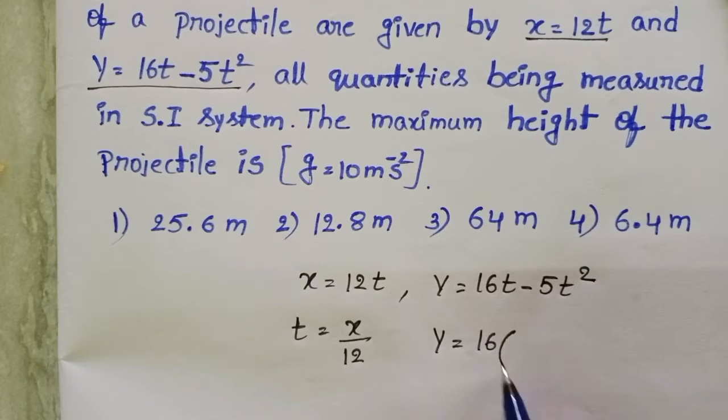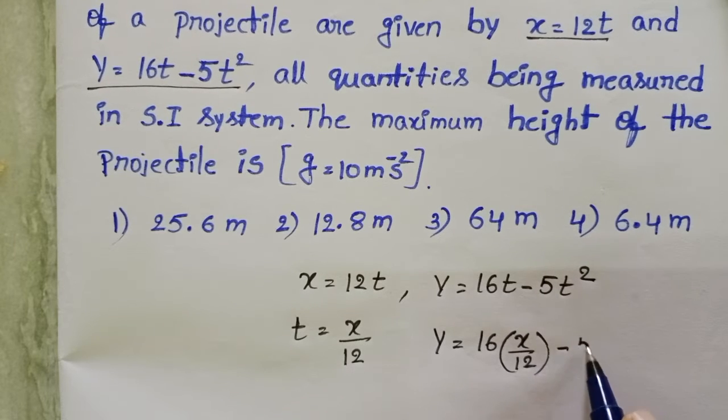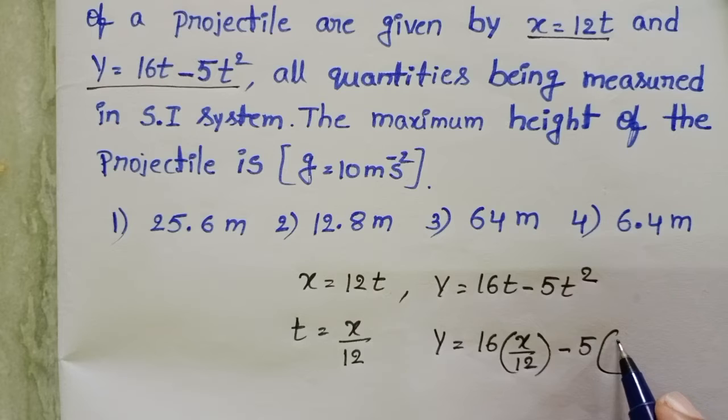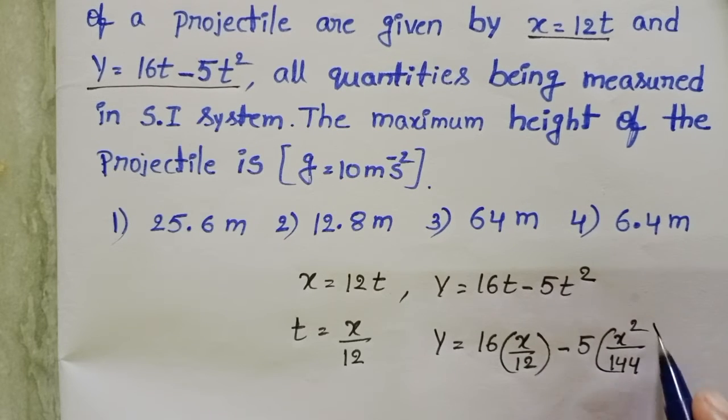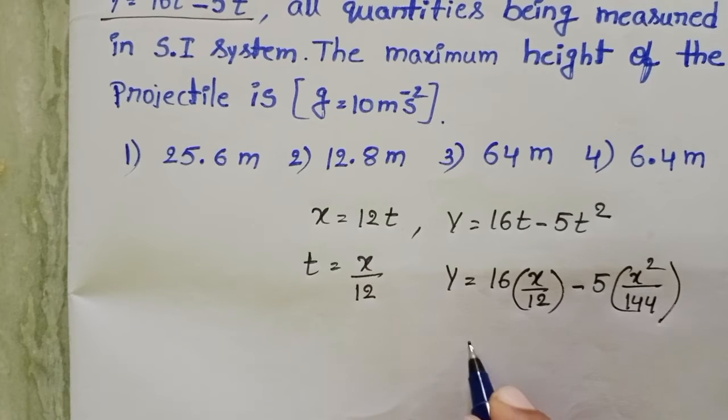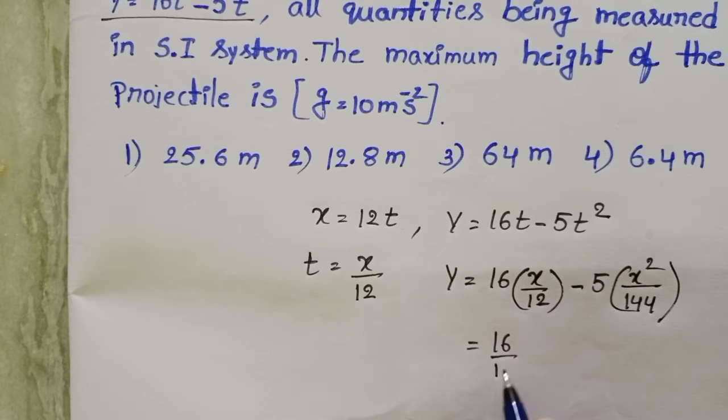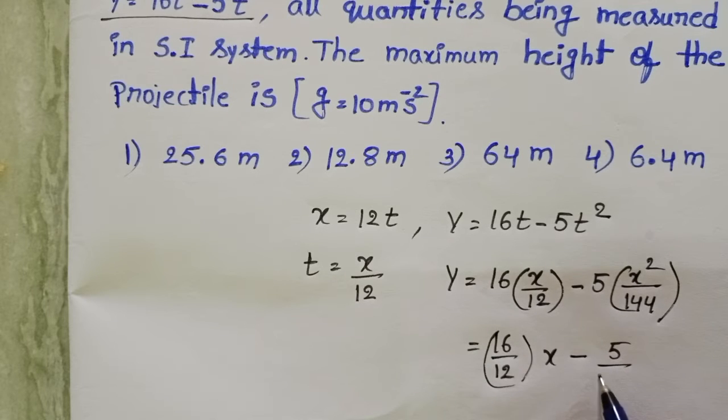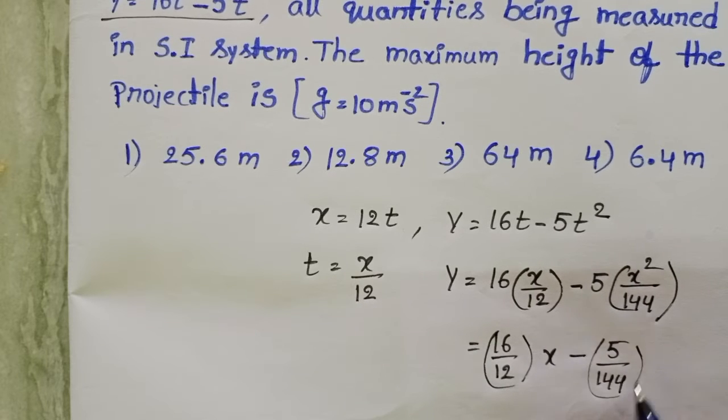y equals 16 into x by 12 minus 5 into x square by 12 square, 144. So now from this, 16 by 12 into x minus 5 by 144 into x square.